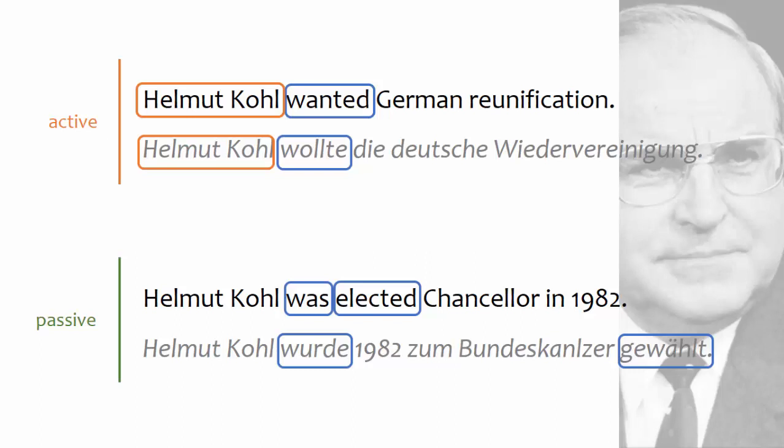In more technical terms, the subject in a sentence in the active is the agent — the person who has agency, or the thing that has agency.